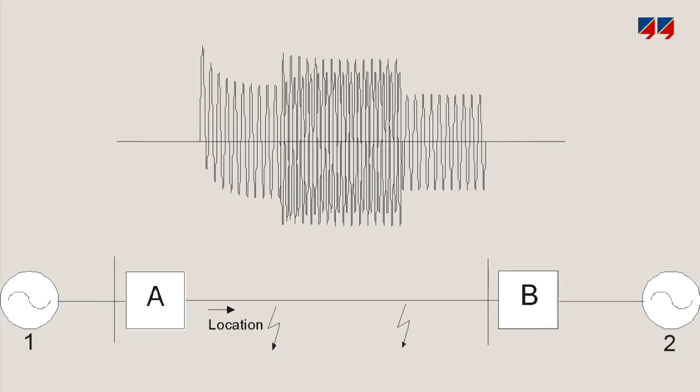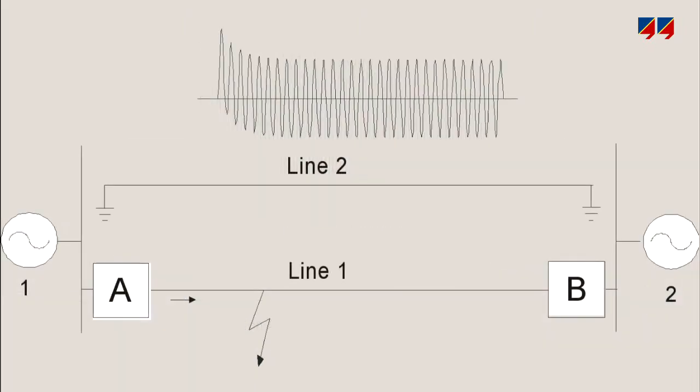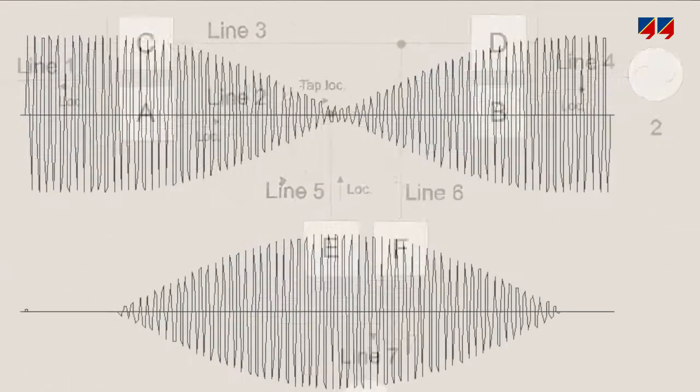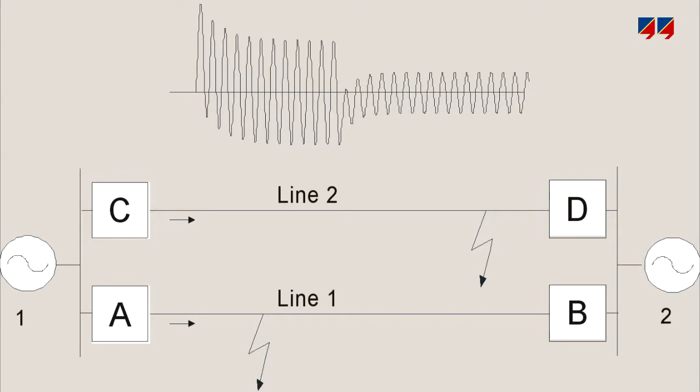For instance, short circuit events on single or parallel lines including mutual coupling, three terminal lines, power swings or revolving double faults are possible.